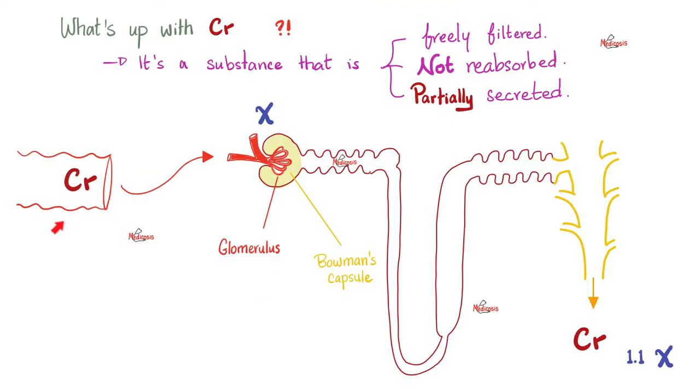Creatinine is a product of creatinine phosphate metabolism. Where did creatinine phosphate come from? From muscles. Now you have creatinine in your blood. This creatinine will be filtered through the kidney, which means it will leave the blood and go to the nephron. This is called filtration.